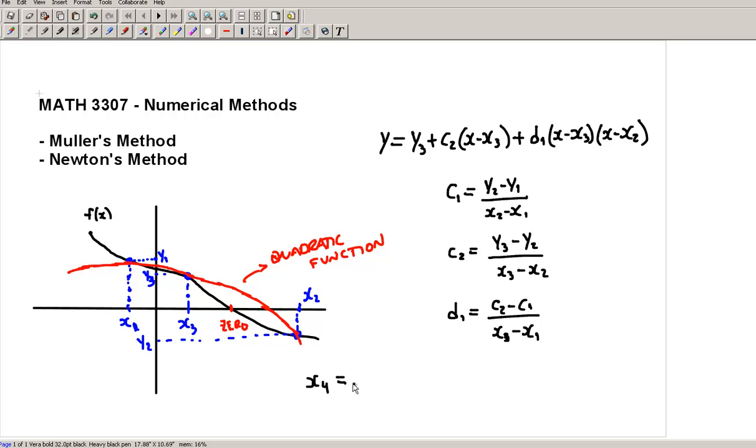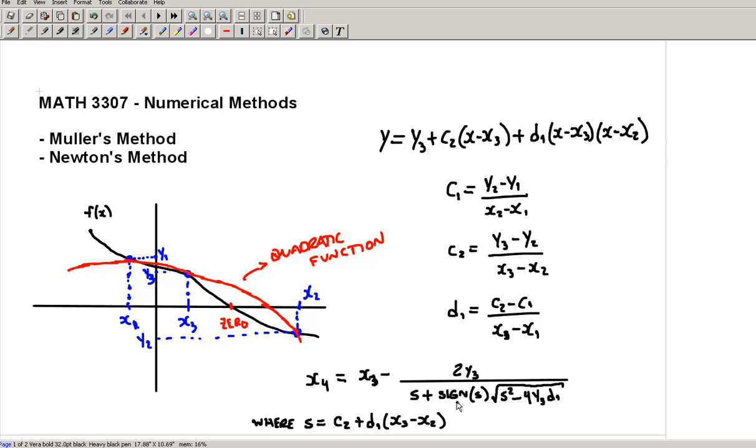And x4, the new iteration, is obtained by the formula that you see there on page 71. Let me write that in here. x4 is based on x3, x2, x1, and there's an extra variable here just to make the formula simpler. S, the variable S here, is given by this formula. Now let's see how we're going to code this procedure. How are we going to write the program for that?